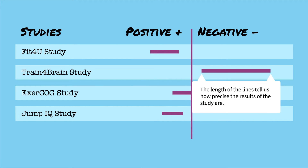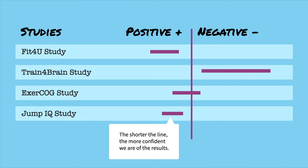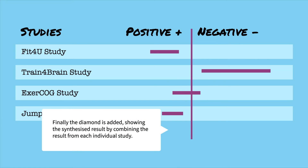The length of the lines tells us how precise the results of the study are. The shorter the line, the more confident we are of the results. Finally, the diamond is added, showing the synthesised result by combining the result from each individual study.